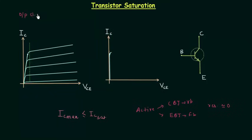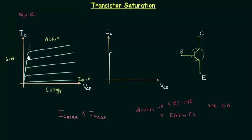This is the output characteristics of the common-emitter transistor. The active region is labeled, the region on the left-hand side of the green line is the saturation region, and the region below base current IB equal to zero is the cutoff region. When the collector current IC is larger than or equal to the maximum collector current, the operating point or Q-point moves into the saturation region, where IC_sat is relatively high and VCE is equal to zero.